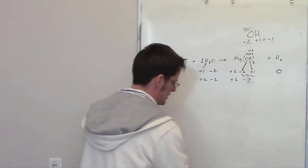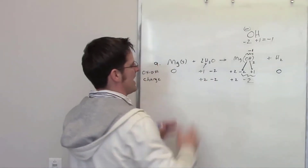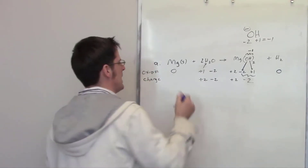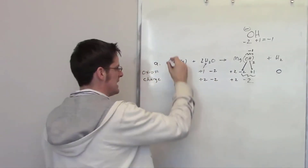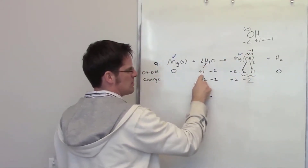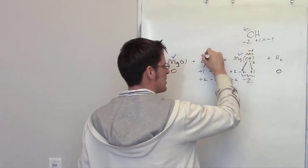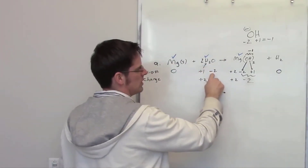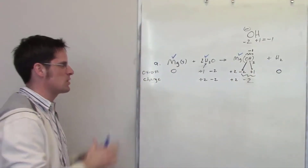Now we have to determine what has been oxidized and what has been reduced. Going left to right, I ask: has anything had its oxidation number changed? Magnesium on the left has an oxidation number of 0; on the right, it has +2 — so magnesium has changed. Hydrogen in H₂O is +1, and the hydrogen still in OH⁻ on the right is also +1 — but the hydrogen in H₂ on the right is 0. So some hydrogens have changed. Oxygen goes from -2 to -2, so oxygen stays the same.